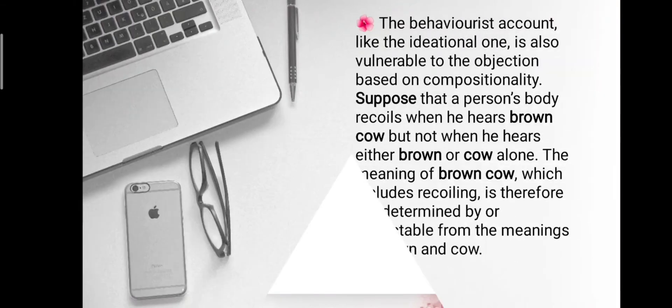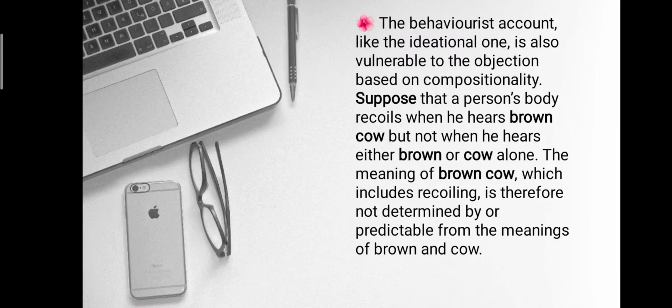Here is the second example. The behavioristic account is also vulnerable to the objection based on compositionality. Suppose that a person's body recoils when he hears 'brown cow,' but not when he hears either 'brown' or 'cow' alone. The meaning of 'brown cow,' which includes recoiling, is therefore not determined by or predictable from the meanings of 'brown' and 'cow' individually.